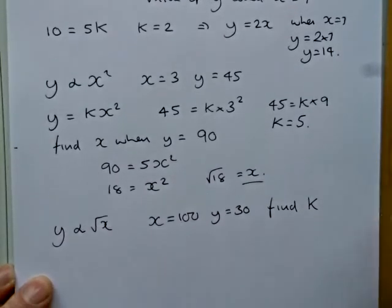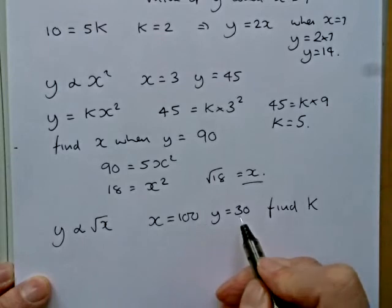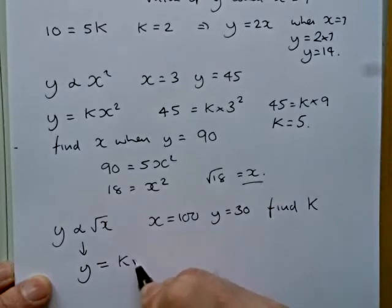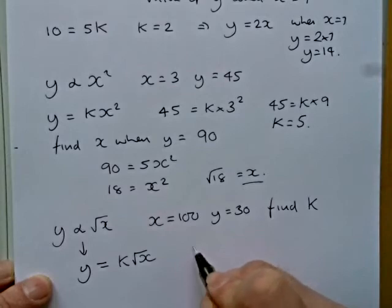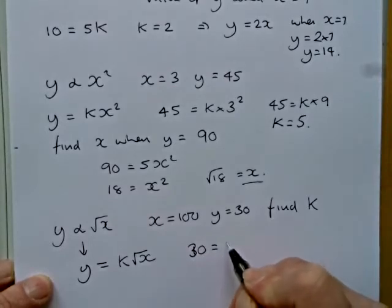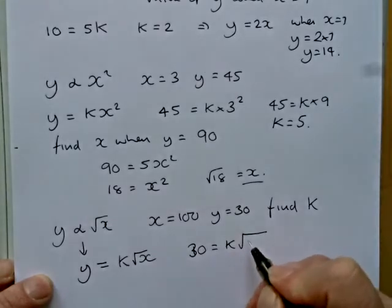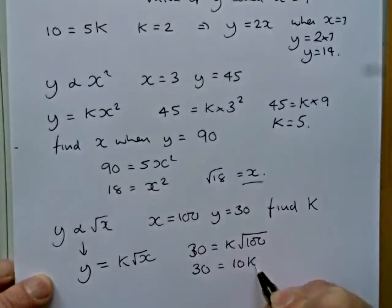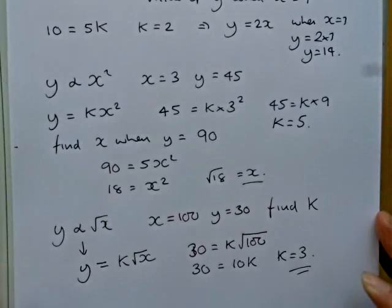So to do that, we'll substitute in 30. Well actually, we'll write down what this means first just so you're sure what I'm doing. y equals k times the square root of x. So 30 is going to equal k times the square root of 100. So 30 will equal 10k. So k will equal 3.